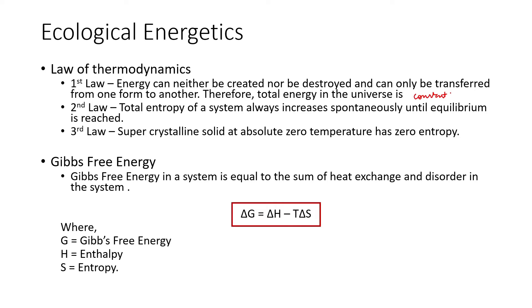Then comes the second law, which talks about entropy. Entropy is the disorderedness or disorientation of a particular system — the movement happening within it. Within a system not in equilibrium, it is disordered and spontaneous. Energy will move towards spontaneity until equilibrium is reached. When something is disordered it is moving, throwing out energy to come to a point of equilibrium. When something is in motion it moves towards equilibrium, releasing energy, and that reaction is spontaneous.